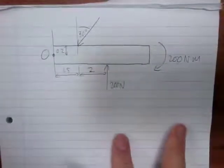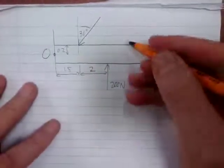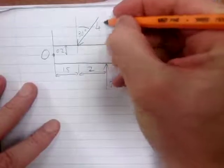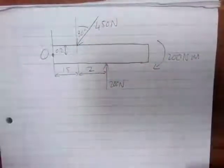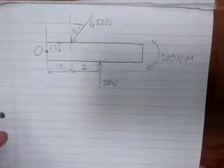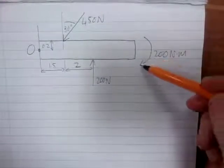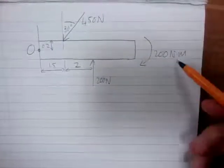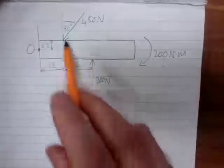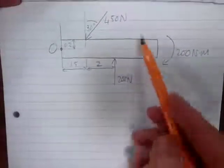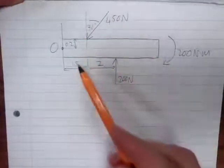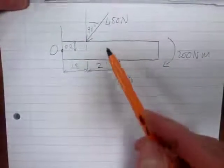So we are trying to see what effect these have at that point by replacing them with a force and couple moment. Here is my drawing: this force is 450 newtons. Also, a reminder that when we see something like this, it refers to a couple moment.